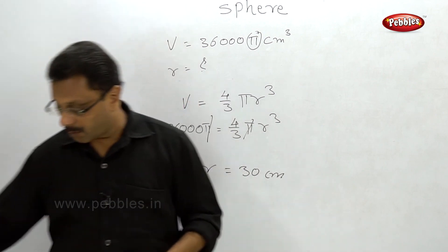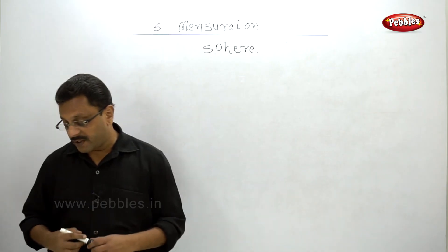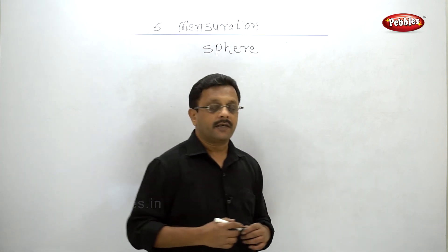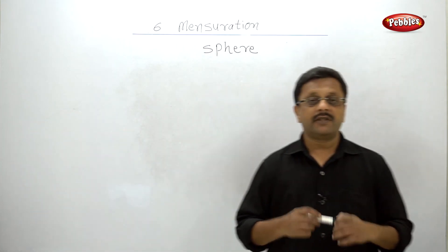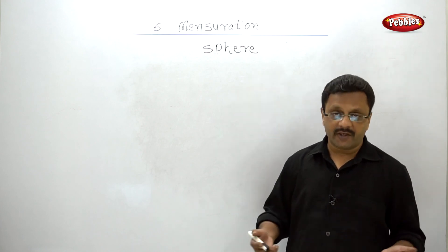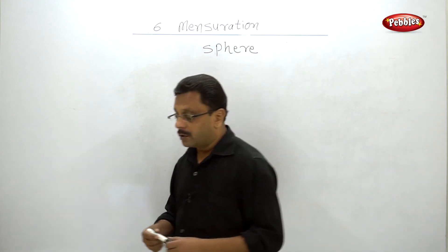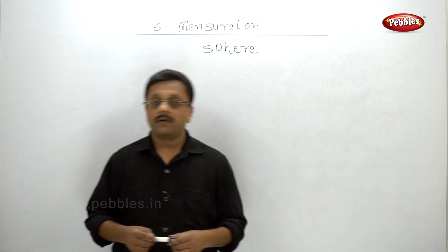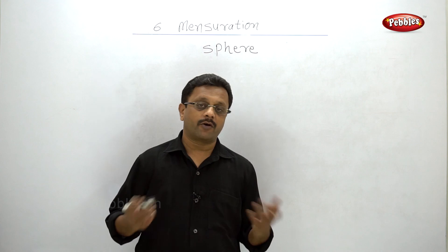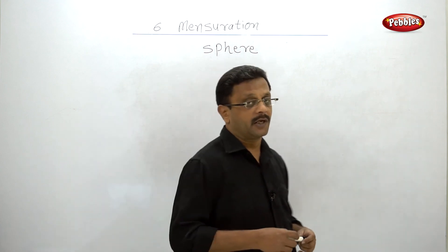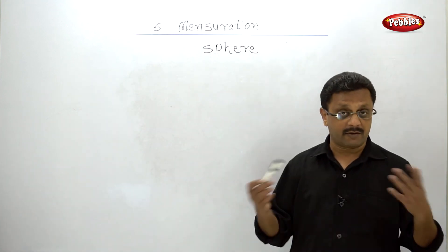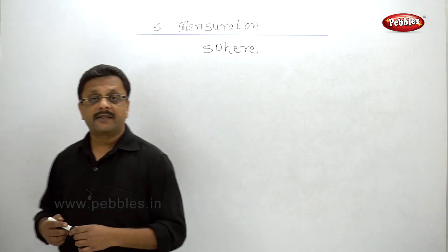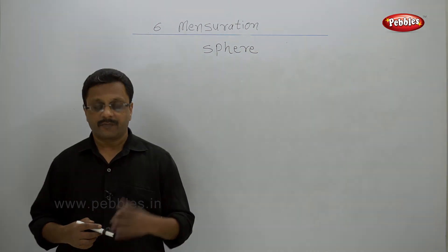Let us go to the next problem: find the surface area and volume of a hemisphere with radius 10 centimeters. The radius is given, and both formulas for total surface area and volume of the hemisphere apply directly. This is a direct substitution of formulas. Now we are going to solve exercise 6.7. Thank you.